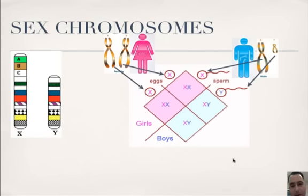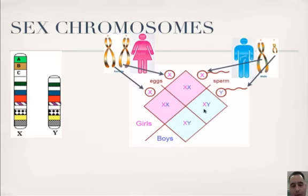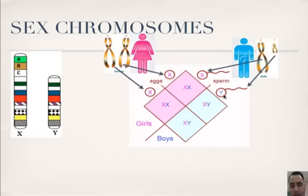Females are XX and males are XY. The 23rd pair are your sex chromosomes — they determine your sex. The probability that two parents will have boys or girls is 50-50. It's actually the male that determines the sex of the child — if he puts an X, mom's going to put an X anyway so you get a girl. But if dad puts the Y, you're going to get a boy.